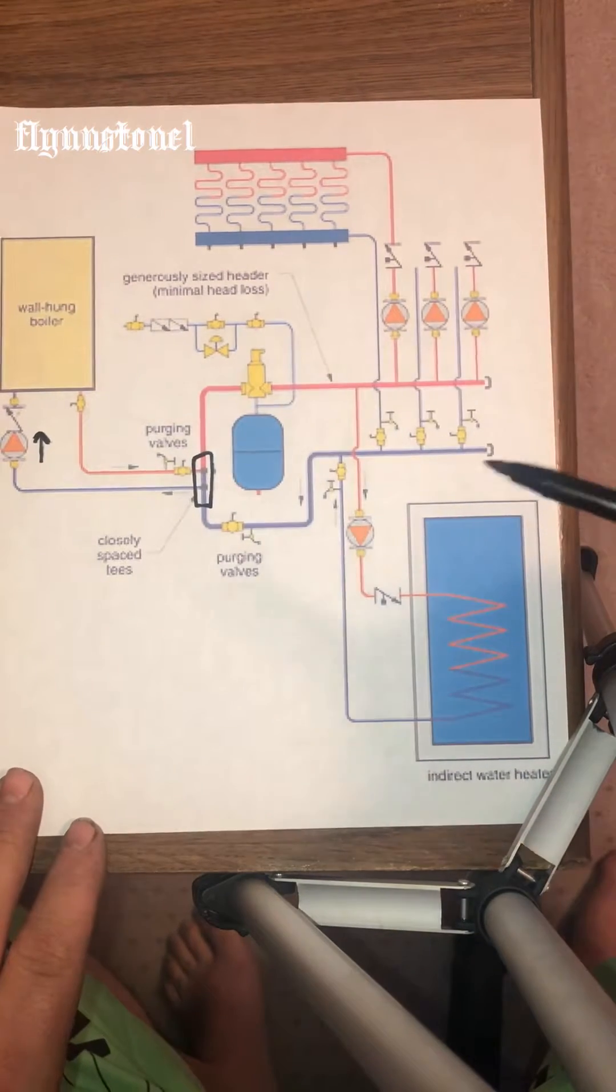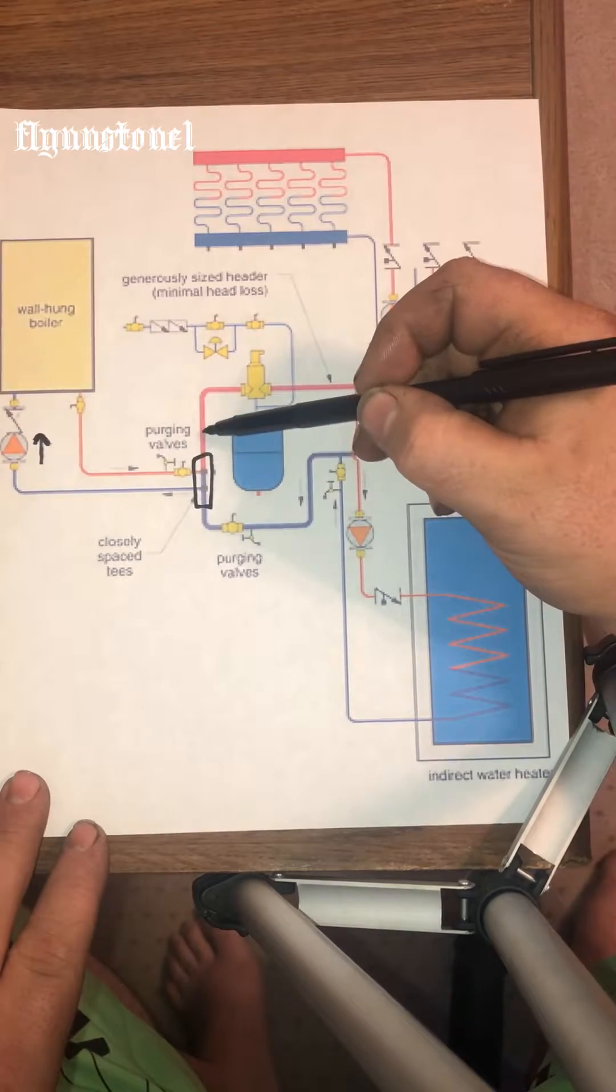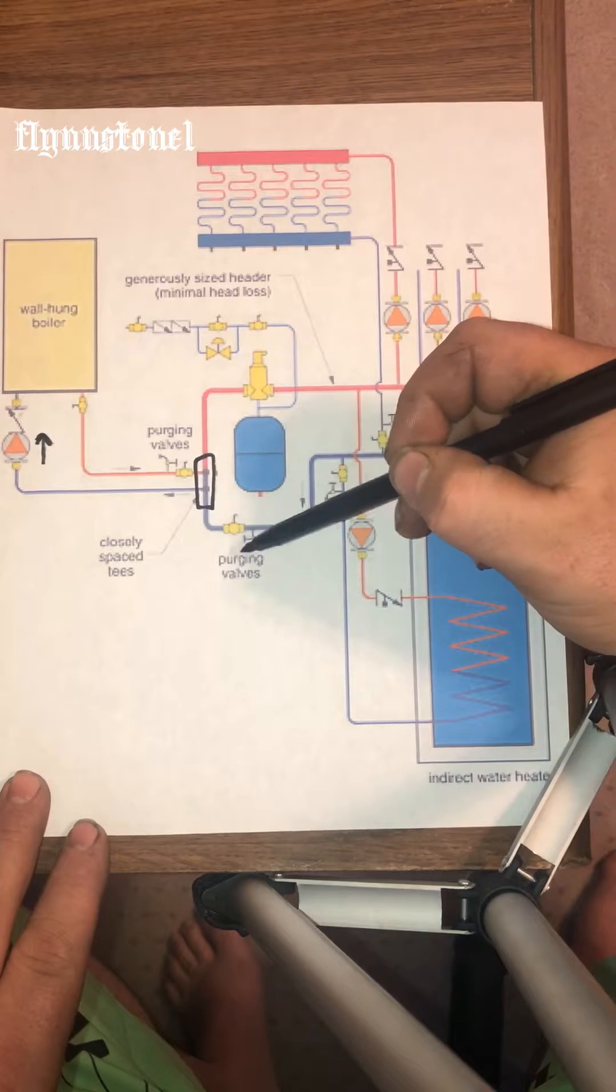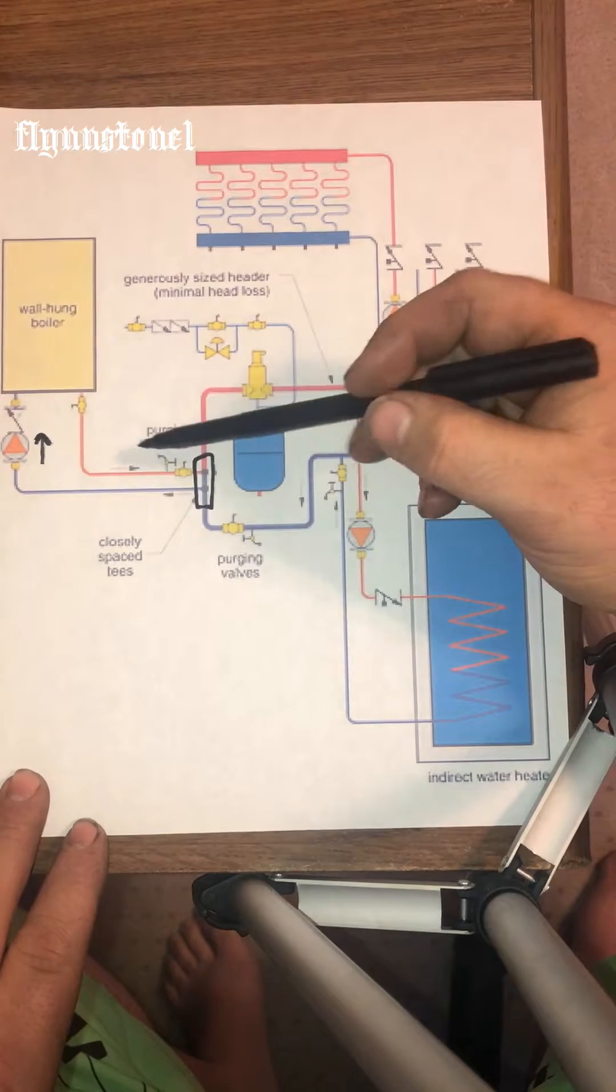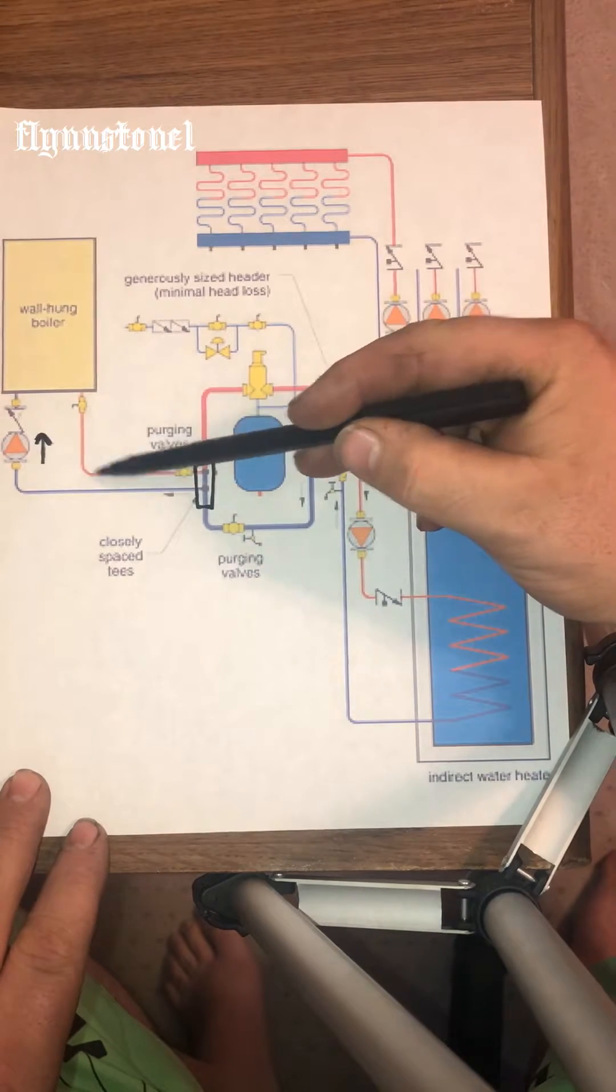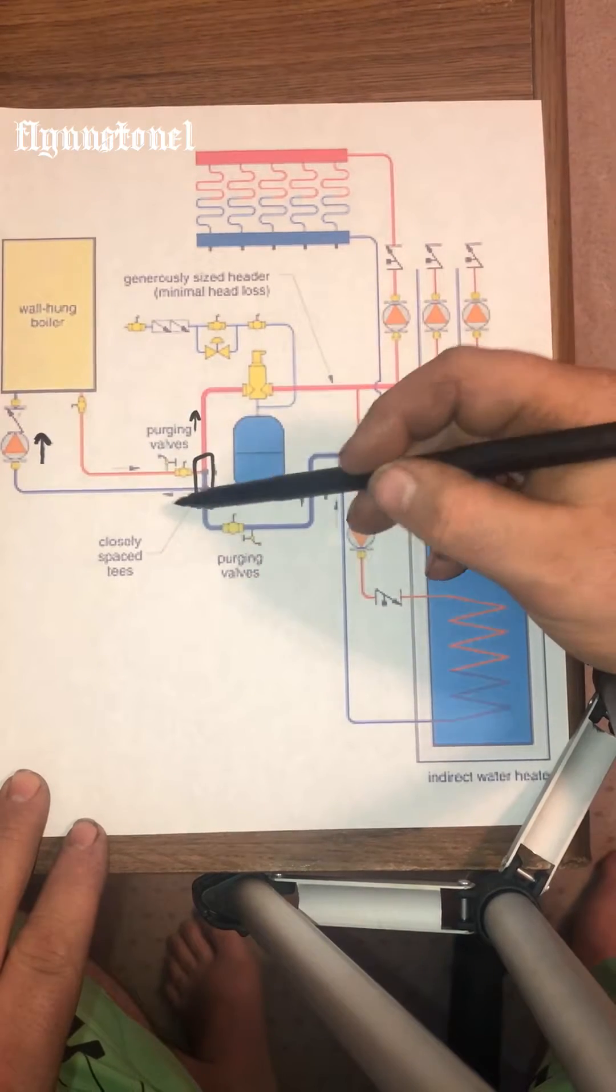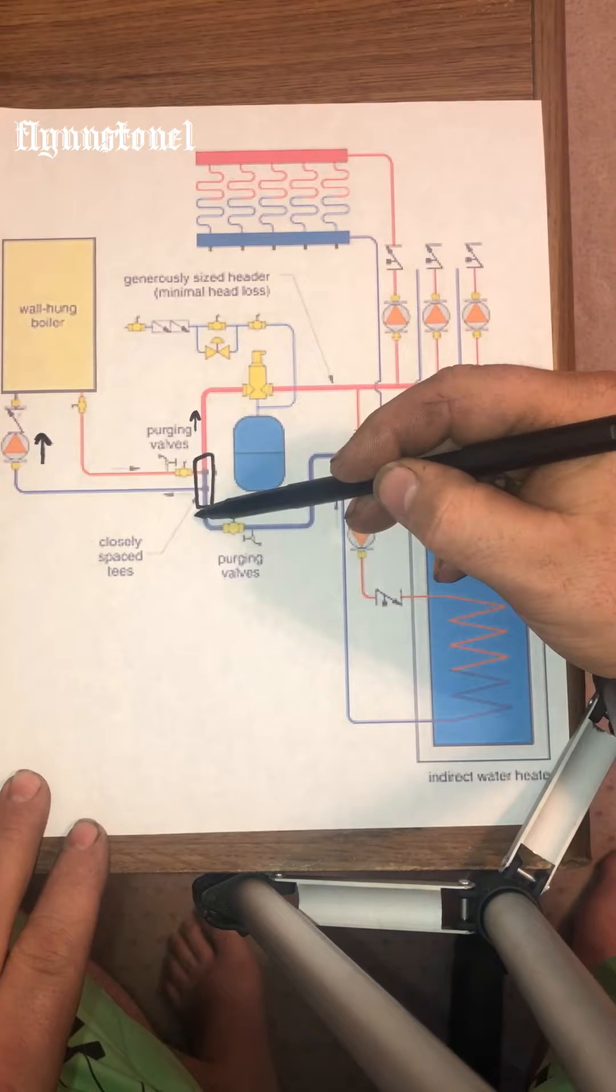Also to remember you cannot switch, cannot cross over your supply and your return. So if you have your supply on this side, this pipe must be the supply and this pipe must be the return.